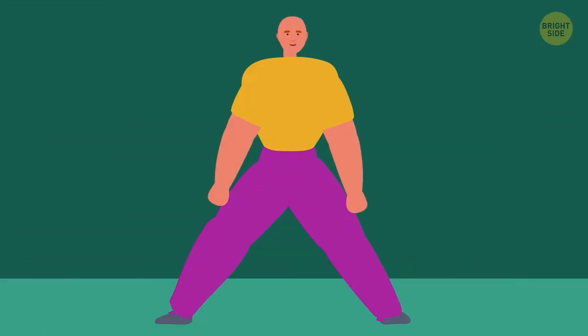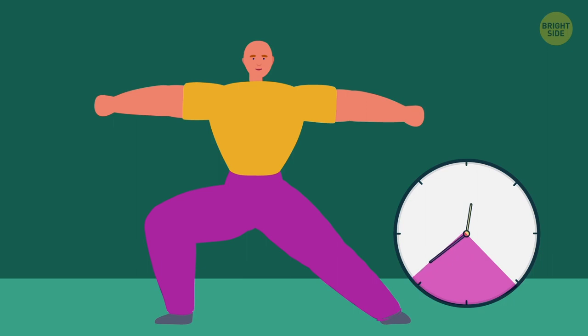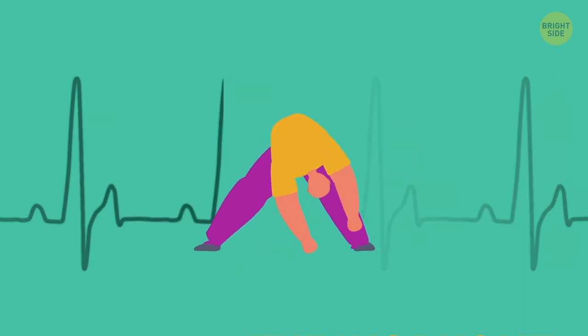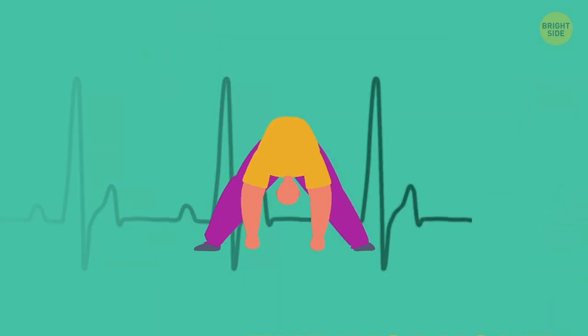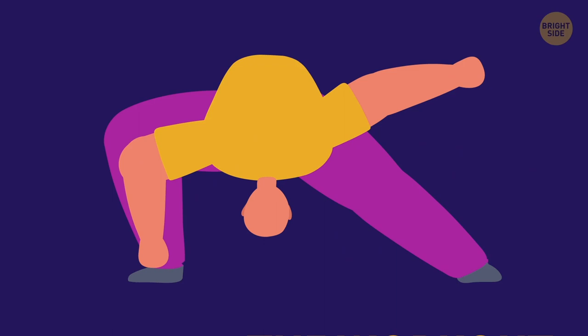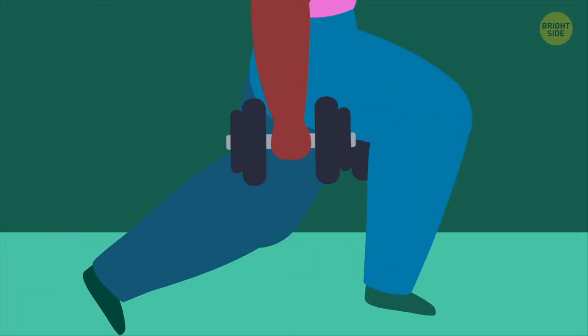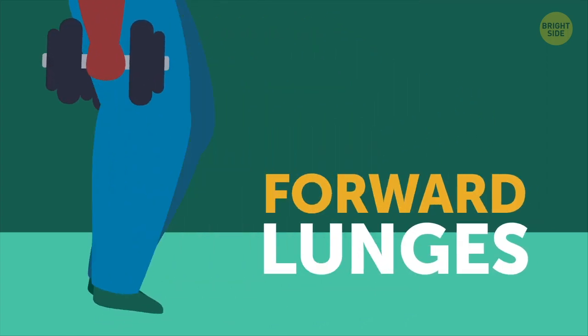Doing static stretching – that's when you're holding a challenging position for about 30 seconds, before a workout – will get you nowhere. This exercise slows down your heart rate and reduces muscle soreness. Static stretching is perfect for after the workout. As for a pre-training warmup, do some dynamic stretching like forward lunges.